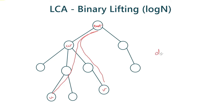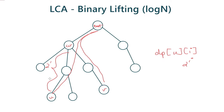I will be calculating a 2D array called DP. DP[U][i] will give me the ancestor of U which is at distance 2^i from U. For example, if i equals 1, then the ancestor of U at distance 2^1 is W. Basically, this array stores the ancestors of a node at distances that are powers of 2 from U.